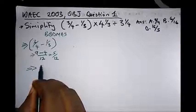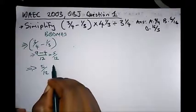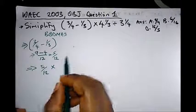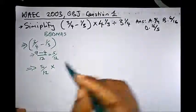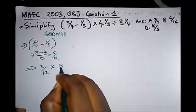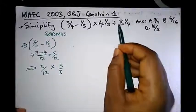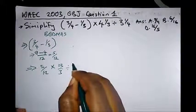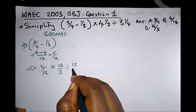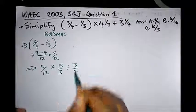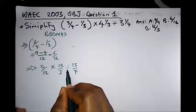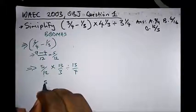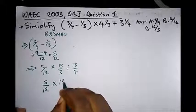We finally have 5 over 12. Now let's change the mixed fractions to proper fractions. We have 4 times 3 plus 1: that's 12 plus 1, which is 13 over 3. Similarly, 4 times 3 plus 1 gives us 13 over 4. So from here, the next operation we perform is division: we have 5 over 12 multiplied by 13 over 3, then divided by 13 over 4.